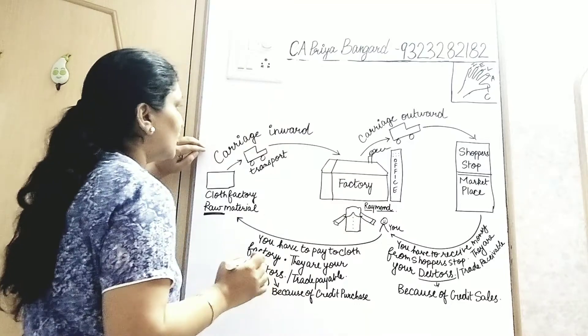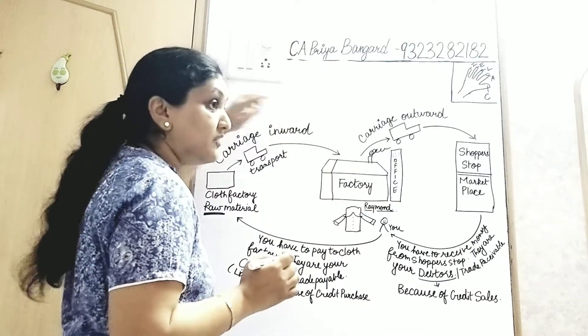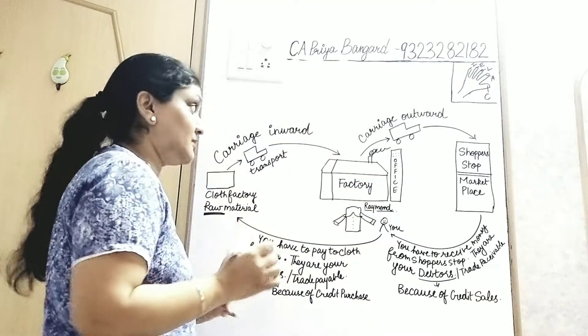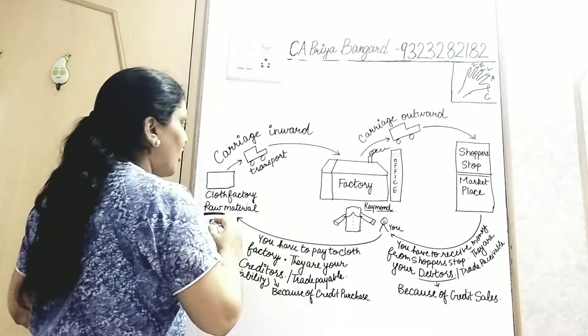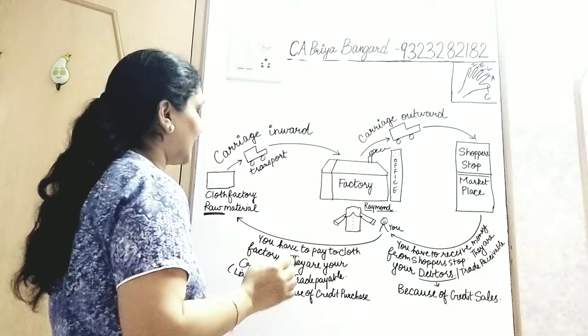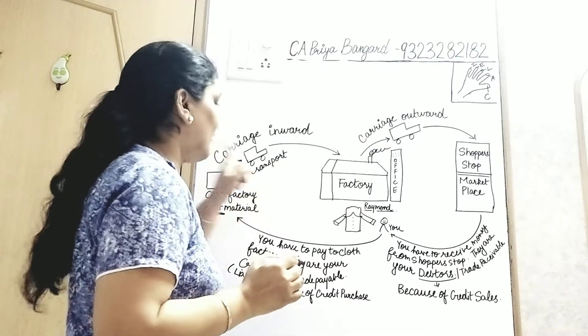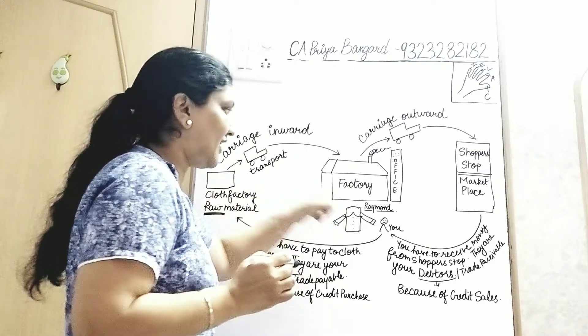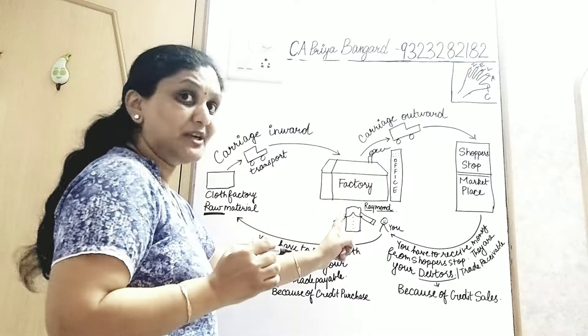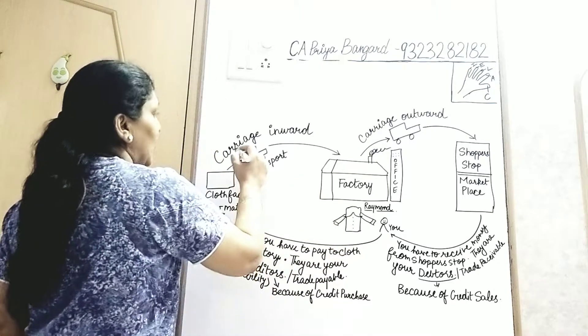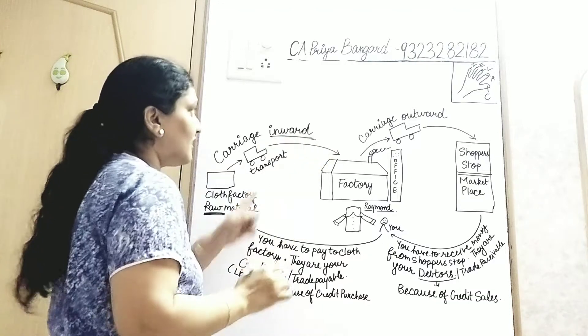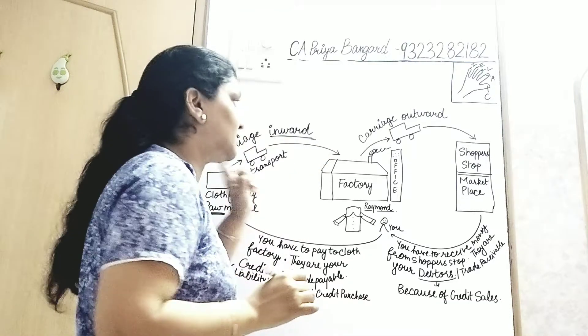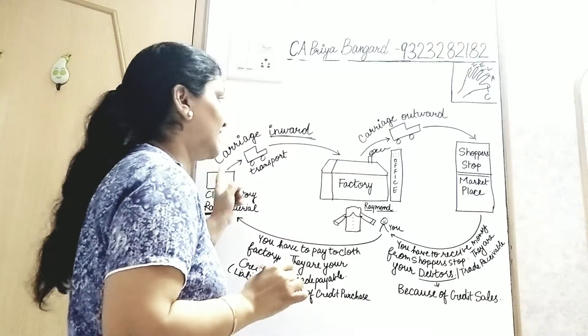The transport which you use and the expenses for transport which you pay to bring raw material to your factory is known as carriage inward. Remember, it is an expense and a direct expense because raw material is coming to your factory. The transportation cost which you pay for raw material coming to your factory is known as carriage inward and it is a direct expense.